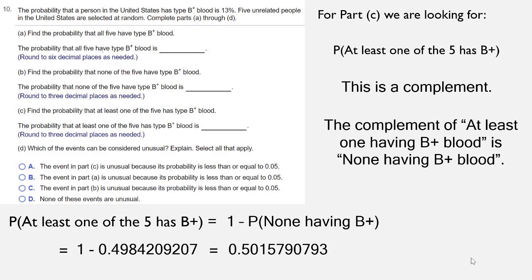Which is 0.5015790793. Rounded to three decimals is 0.502. So that's your answer for part C.